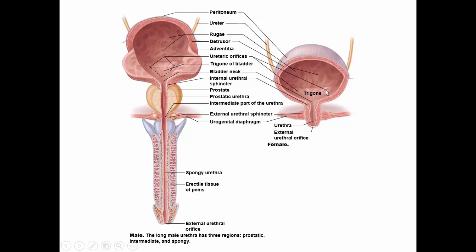Here in the female, you can see the trigone with the ureter openings and the urethral opening. The same thing is present in the male. In the male, the urethra passes through the prostate gland — this is called the prostatic urethra — and then through the penis, which is called the spongy urethra, to get to the external urethral orifice. The intermediate urethra is the portion passing through. This is how urine escapes from the body.